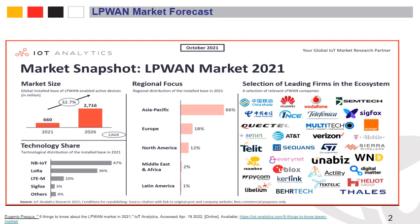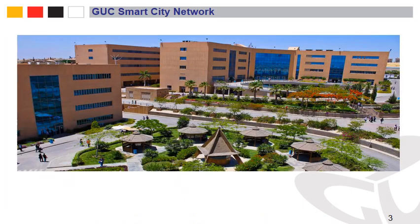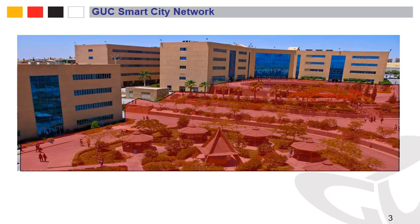As an example, in the New Capital in Egypt, there are many projects working on installing LoRa for smart waste management, smart parking, and many other smart applications you could think of. In this project, we would like to work on a GUC Smart City Network — using the GUC as a use case for multiple IoT applications, whether it is environmental monitoring, smart parking, or waste management.